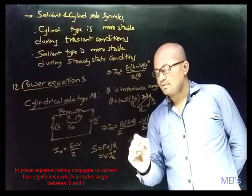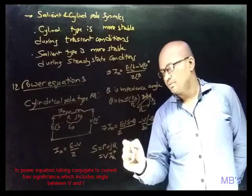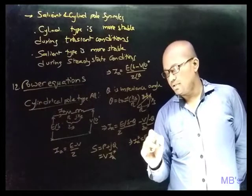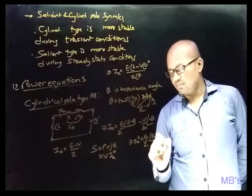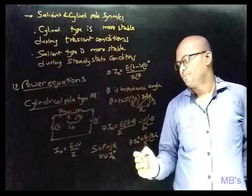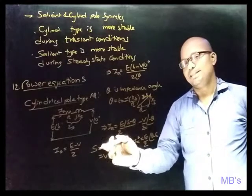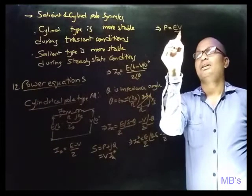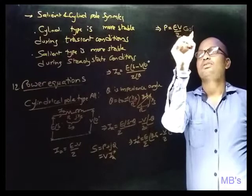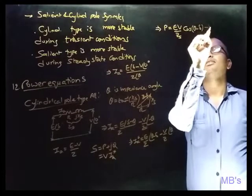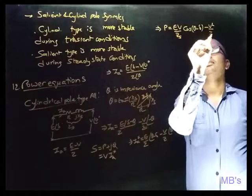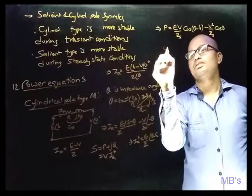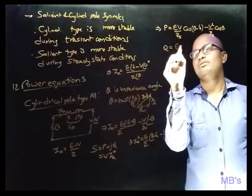The conjugate of IA* equals (E/Z) at angle (θ − δ) minus (V/Z) at angle θ. Substituting and equating real and reactive terms gives the real power P equals (EV/Zs) × cos(θ − δ) minus (V²/Zs) × cos θ.